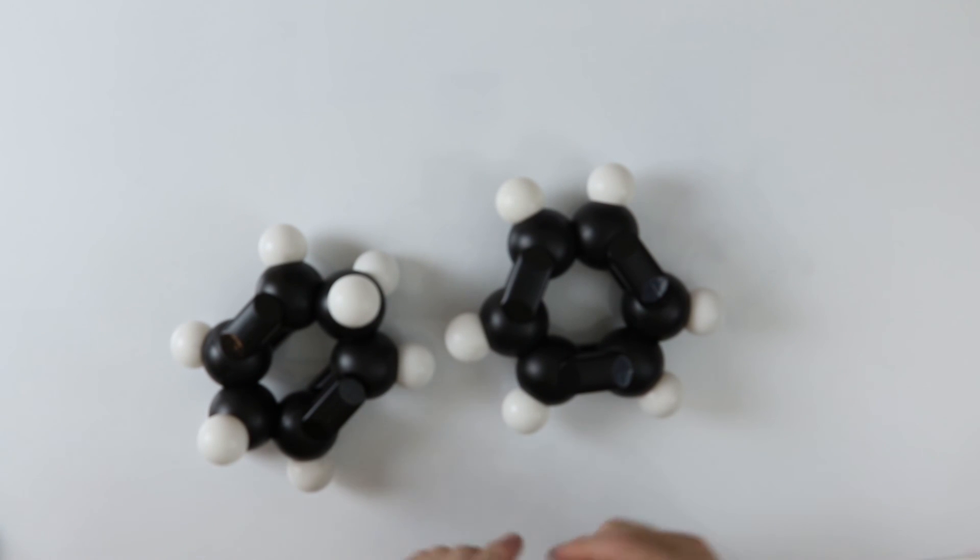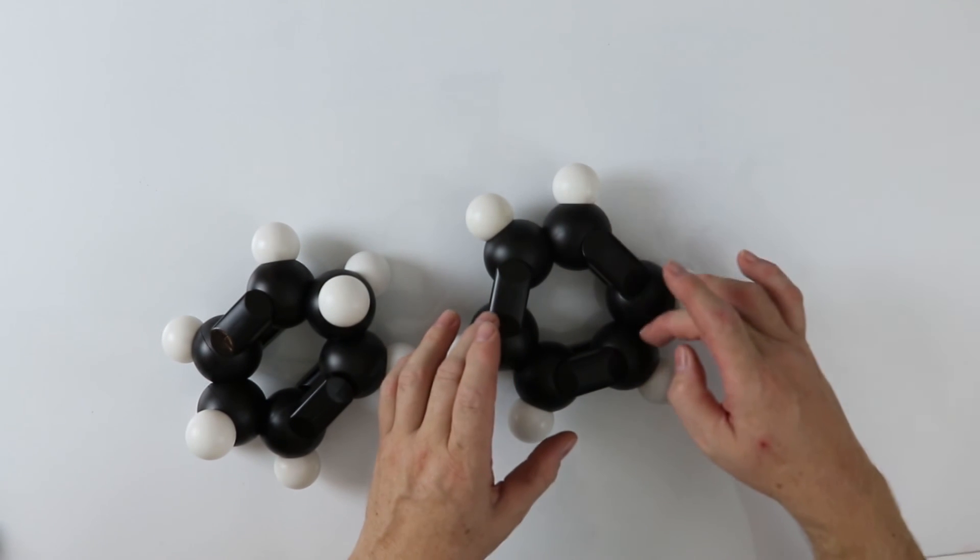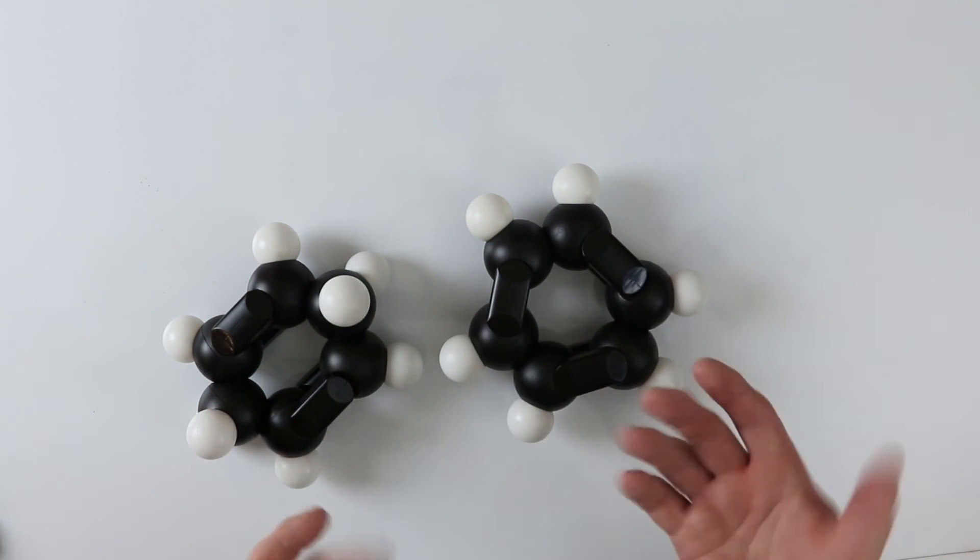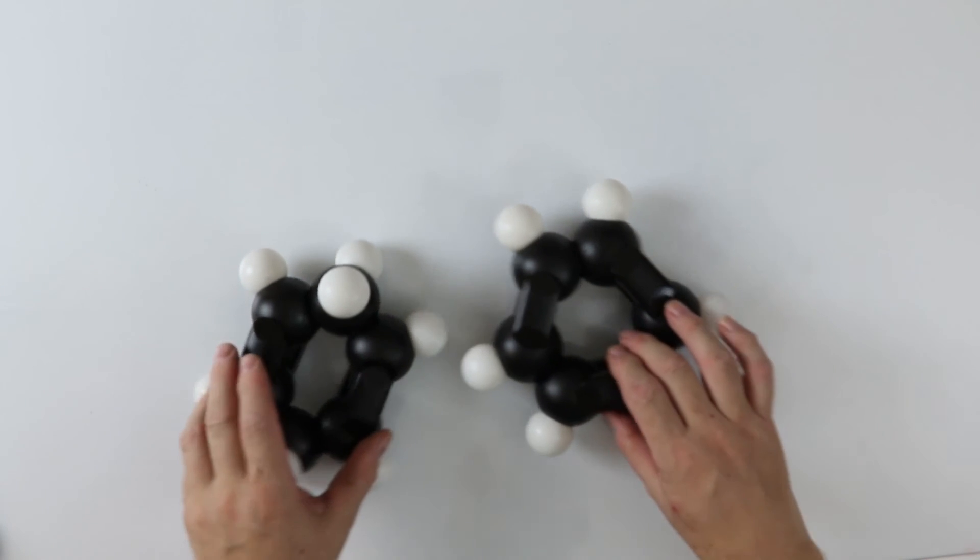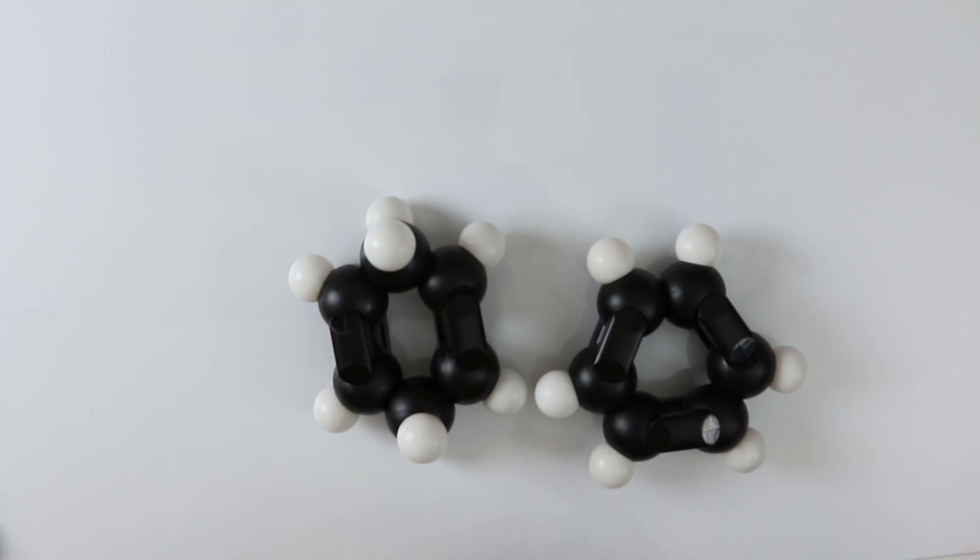Another way that benzene is different to cyclohexene is that it will not react with a halogen whilst cyclohexene will, which we might have expected if these double bonds were present.